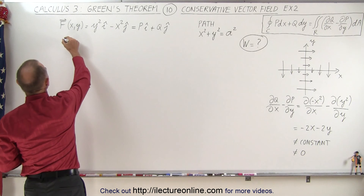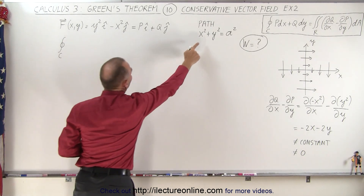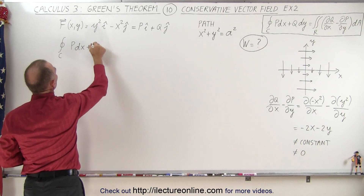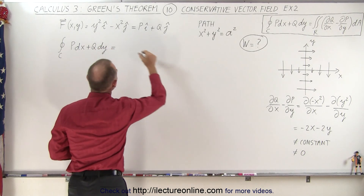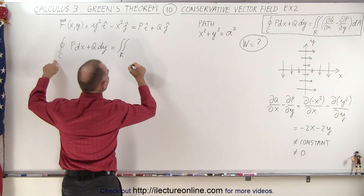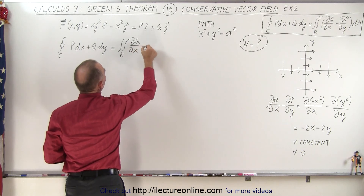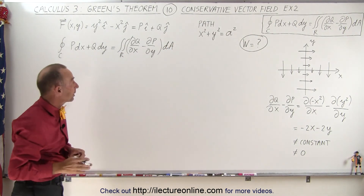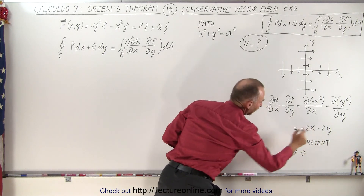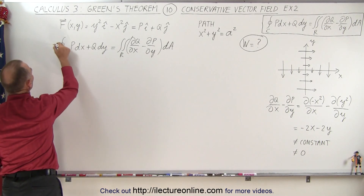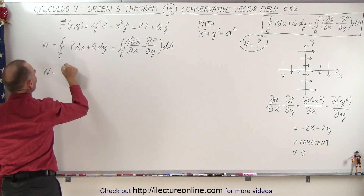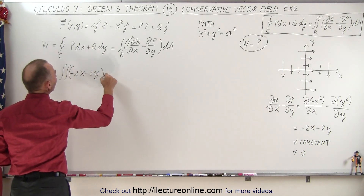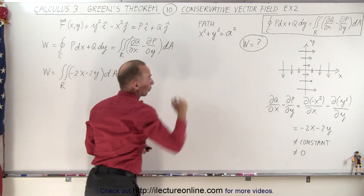We're going to evaluate the line integral on a complete closed path, which equals the integral of P dx plus Q dy. By Green's theorem, that equals the double integral over the region enclosed by the path of the partial of Q with respect to x minus the partial of P with respect to y, times dA. We already calculated that expression, so the work done equals the double integral of minus 2x minus 2y times dA, evaluated over the region enclosed by that circular path.